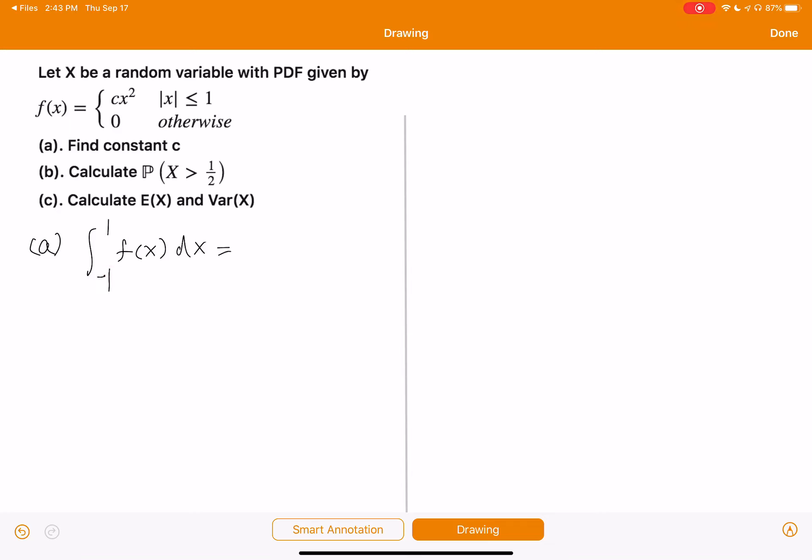So here the integral should be from negative one to positive one, and f is cx squared in this range. So this is cx squared dx. And this is equal to 2 over 3 times c. To make this a density function, this must be equal to 1. So this implies c is equal to 3 over 2.